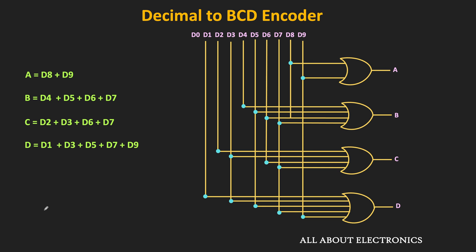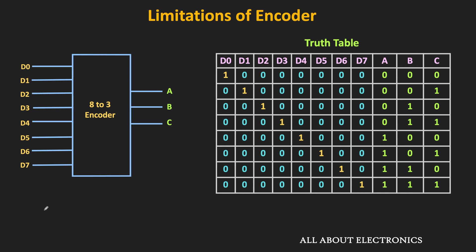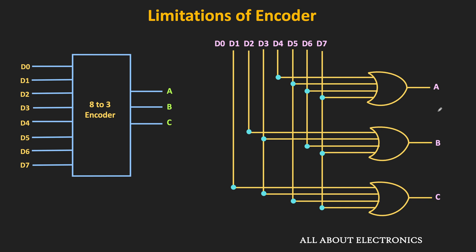Now let us look at a few limitations of this normal encoder. It is assumed that at most only one input is high at a time. When all inputs are zero, or when more than one input is high, the encoder will not work properly. In the 8-line to 3-line encoder, when D0 is high all other inputs are zero, the output is 000 — this is also evident from the logic circuit since D0 is not connected to any OR gate. However, if all inputs are zero, the output is also 000, meaning two different input conditions produce the same output.